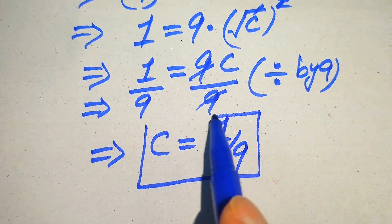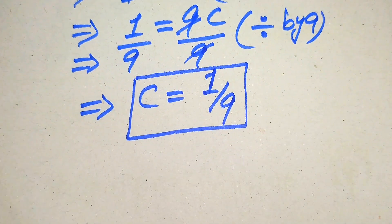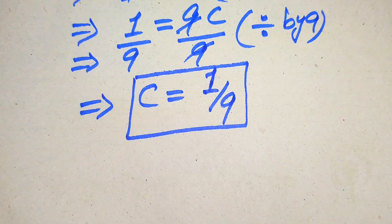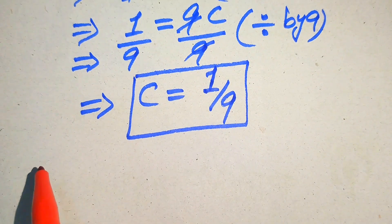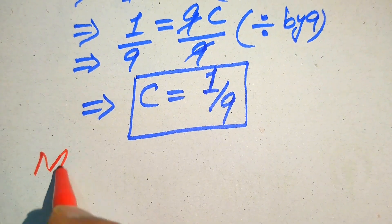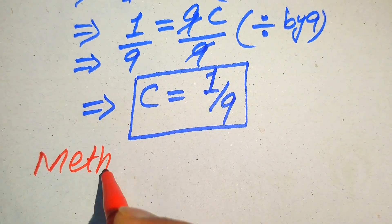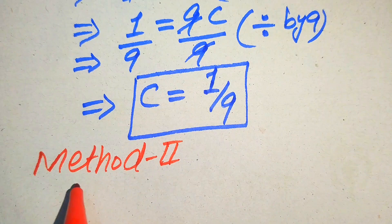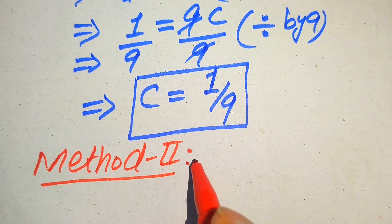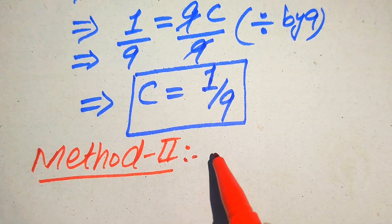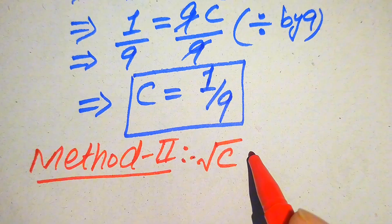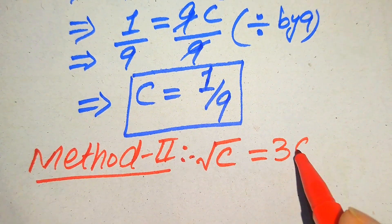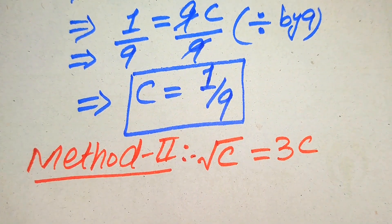This is our final root from the first method: c equals 1 over 9. Now we solve this problem using the second method, and at the end we will verify whether this root is a solution or an extraneous root. In the second method, we copy down the given equation: square root of c equals 3c.